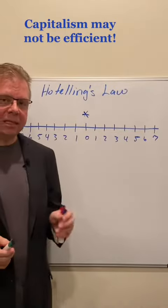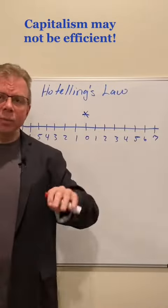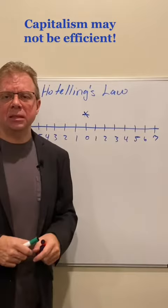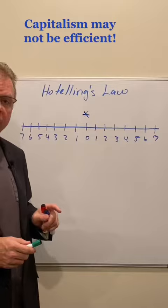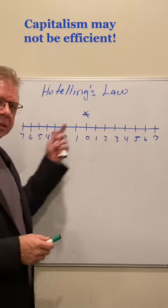So the idea of Hotelling's Law is this. There's a guy on the beach. Everybody's out there. He wants to sell ice cream cones. He's the only one. So he's going to naturally set up in the middle, right? It's the easiest access he can gain.